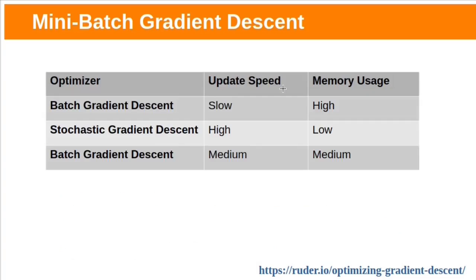You can see here the updation speed and memory usage by these three gradient descent algorithms. Batch gradient descent is slow because it updates weights after processing the entire dataset — for a single parameter update it needs to process the entire dataset, so it takes more memory. The updation speed of stochastic gradient descent is high because for each single training example it updates the weights, and it requires low memory since it only needs to process a single training example. The updation speed and memory usage of mini-batch gradient descent is medium when compared with batch gradient descent and stochastic gradient descent.